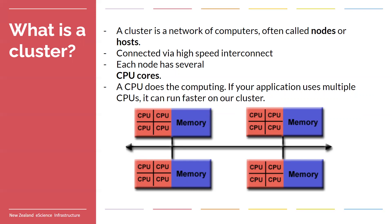In addition to this, our high performance computers are connected to each other via an interconnect. This interconnect is much, much faster than if you just plugged a whole lot of computers together with internet cables. The software and hardware infrastructure of high performance computers is purpose-built to take advantage of running parallel code, utilizing all the extra CPUs and many other resources available. So if you're doing any work that's able to utilize multiple CPUs, you'll generally find it runs more performantly on high performance computers than on your local machine.